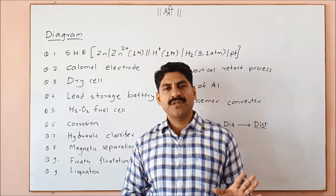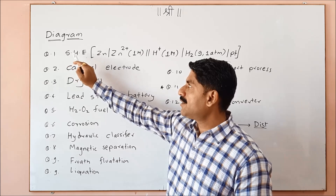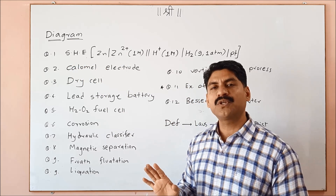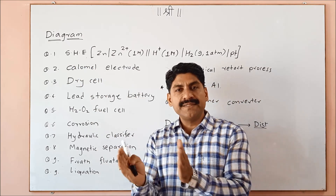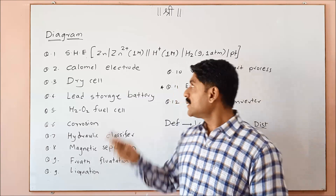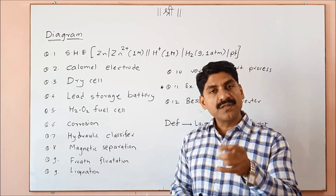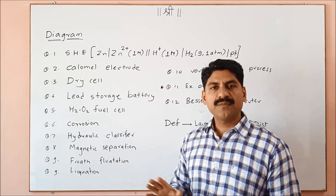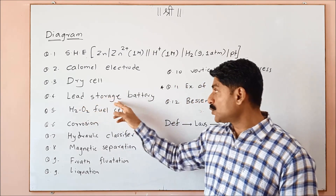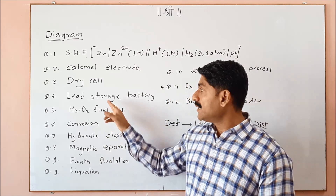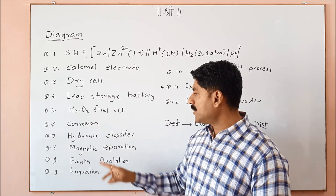Figure draw questions have two sections. For electrochemistry you have to draw the standard hydrogen electrode as a primary reference electrode. Also the lead storage battery diagram, H2O fuel cell, and corrosion — these are all important diagrams.